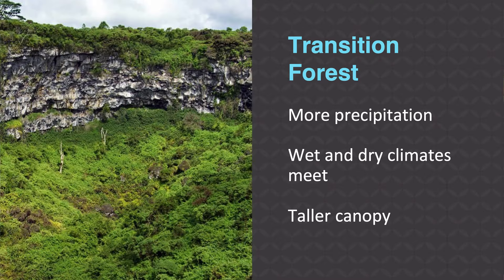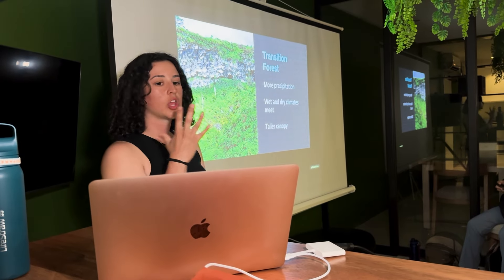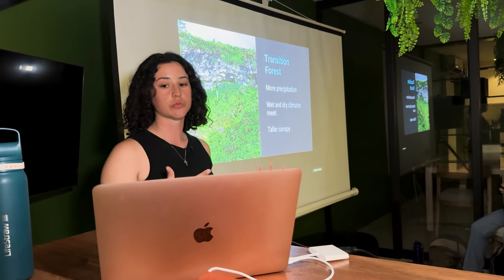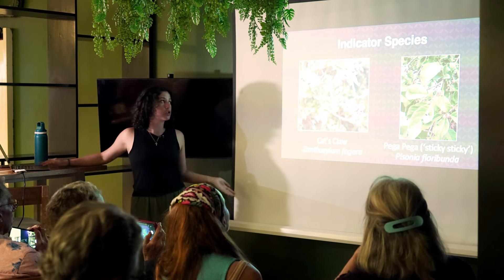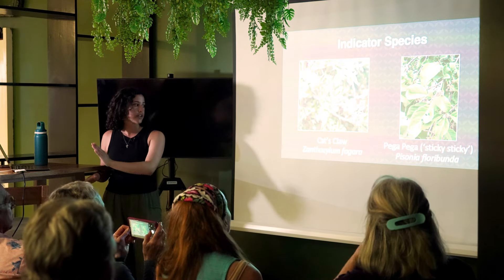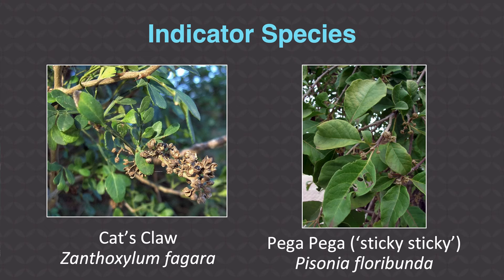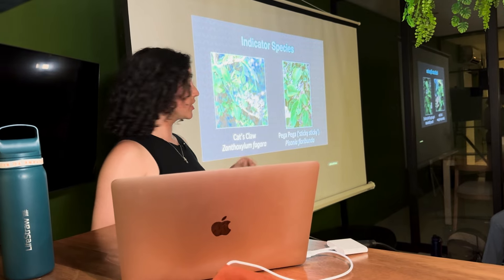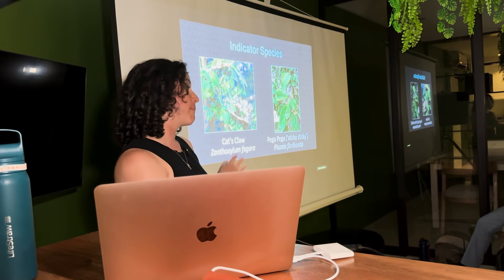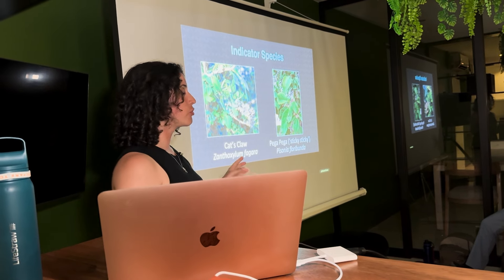The next ecosystem is the transition forest — where the wet and dry climates meet in the Galapagos. We start to see a taller canopy and a lot more precipitation, transitioning from the dry lowlands to the humid highlands. Two main indicator species are Pega Pega — which translates to 'sticky sticky' because the seeds are sticky and stick to animal fur or clothing — and cat's claw, Zanthoxylum fagara. Cat's claw also largely defines the brown zone only found in Santa Cruz.